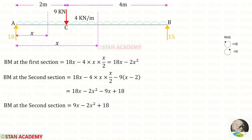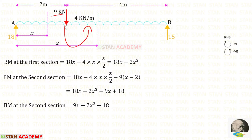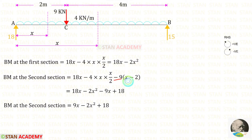Now let us find the bending moment in the second section. RA is clockwise, positive, at distance x: 18x. The UDL is anti-clockwise, negative: minus 2x². The point load 9 kN is also anti-clockwise, negative, at distance (x minus 2), so we subtract 9 times (x minus 2). Expanding: 18x minus 9x gives positive 9x. The bending moment expression for the second section simplifies accordingly.